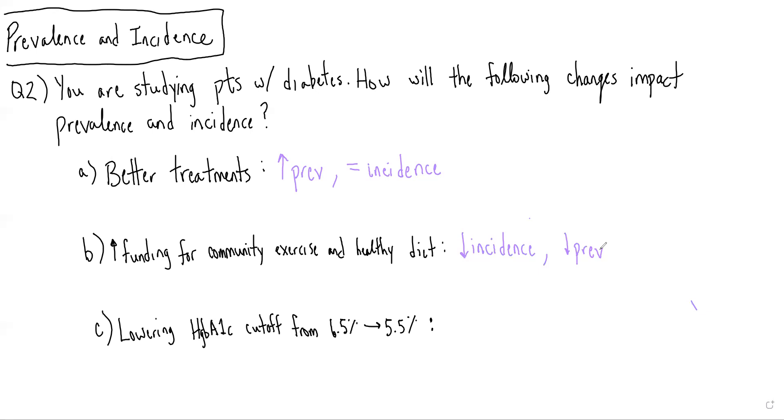Lastly, let's think about how lowering the hemoglobin A1c cutoff from 6.5% to 5.5% would impact prevalence and incidence. If we were to lower the cutoff, more patients would qualify as having diabetes, and therefore we would expect incidence to go up. There'd be more patients newly diagnosed with the disease.